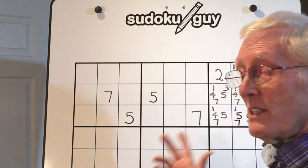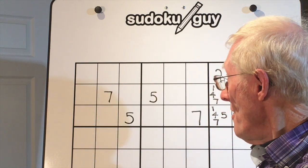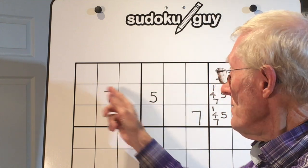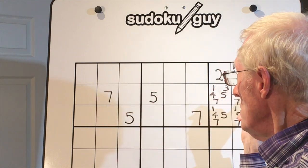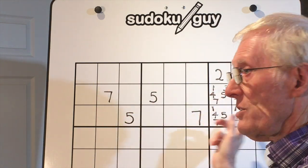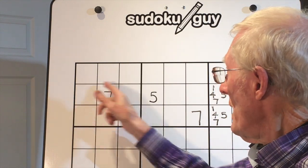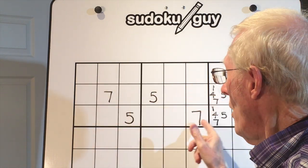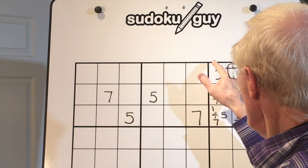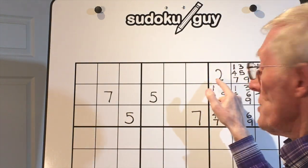As we were doing the puzzle, I discovered that there was a 7 and a 5 in this row, and there was a 5 and a 7 in this row. Immediately, that becomes the blade of what we call a cleaver, and this section here is the handle.